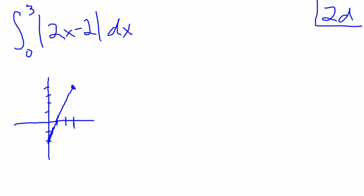You'd probably say, well, how do I graph the absolute value of 2x minus 2? It's not that bad. I just take this little part down here which is negative, make it positive.